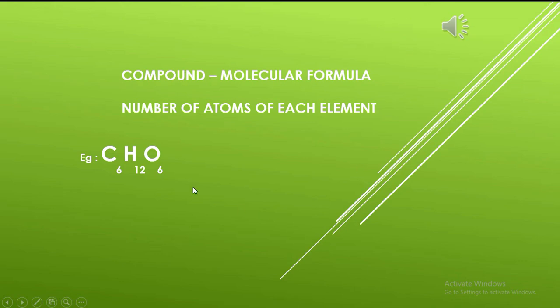A molecule of a compound can have atoms of different elements present in whole numbers. The molecular formula of a compound is written by writing the number of atoms of each element in one molecule.